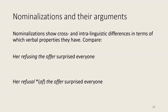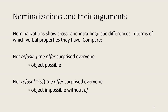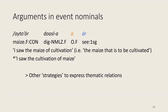For example, in English, if you compare the nominalization with the suffix '-ing,' you can say 'her refusing the offer surprised everyone' — so there the object can be licensed. But with a different type of nominalization, namely 'refusal,' suddenly 'a refusal the offer surprised everyone' doesn't work; you need 'of' there. The Iraku event nominals seem similar to the 'refusal' type in English where they don't license an object. But like in many other languages with these kinds of restrictions, there are other strategies to express thematic relations between a nominalized verb and a nominal.